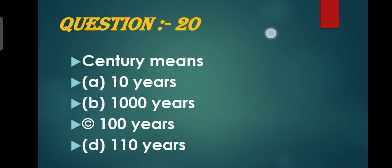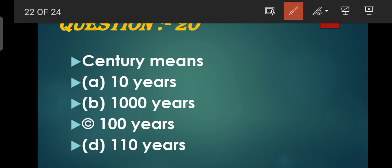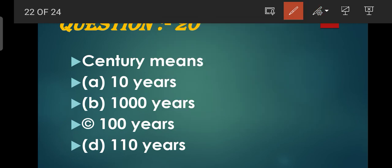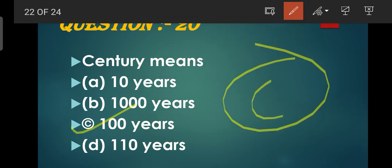Century means - century kitne time period ki hoti hai? Options: 10 years, 1000 years, 100 years, 110 years. Ek century hoti hai 100 years ki. So C - 100 years - C is the correct option.